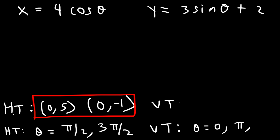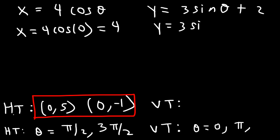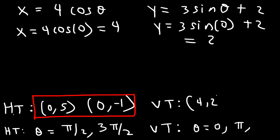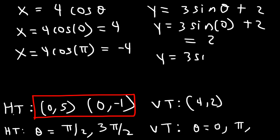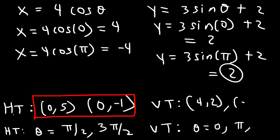Now let's determine the locations of the vertical tangent lines. When θ is 0: x is 4 cosine(0) — cosine(0) is 1, so x equals 4. For y: sine(0) is 0, so 3 times 0 is 0, plus 2 gives 2. The first point is (4, 2). When θ is π: x is 4 cosine(π) — cosine(π) is negative 1, so x is negative 4. Sine(π) is 0, so y is 0 plus 2, which is 2. So we have another vertical tangent at (−4, 2).